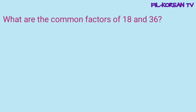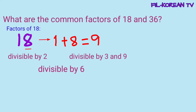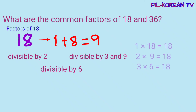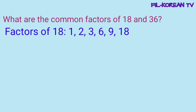Next, what are the common factors of 18 and 36? Kunin natin yung factors gamit yung divisibility rules. Ang 18, ito ay even number. So, divisible siya ng 2. At kapag i-plus natin ang kanyang digits, 1 plus 8 equals 9. Ang 9 ay divisible ng 3 at 9. At dahil divisible ito ng 2 at 3, ibig sabihin divisible din ito ng 6. So, mayroon na siyang factors na 2, 3, 6, at 9. At syempre, mayroon din itong factors na 1 at yung number mismo na 18. So, ang lahat ng factors ng 18 ay 1, 2, 3, 6, 9, and 18.